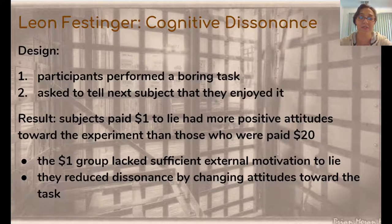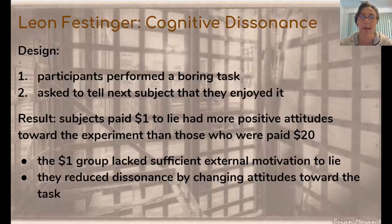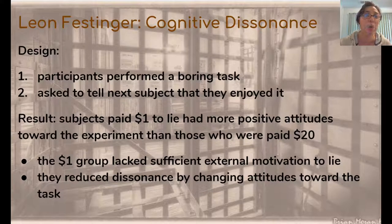The experiment that Leon Festinger did to prove cognitive dissonance was designed like this. Participants were brought in to do a super boring task — something like counting things or writing the same line over and over for an hour. Then they had to come out and tell the next subject who was waiting that they enjoyed the experiment. Half of the participants were paid a dollar to lie and say the experiment was fun; the other half were paid $20 to lie.